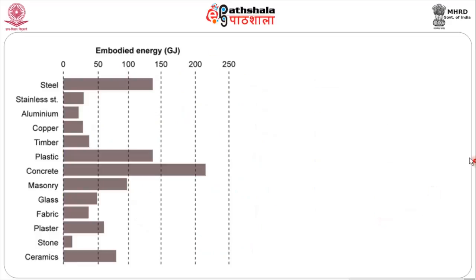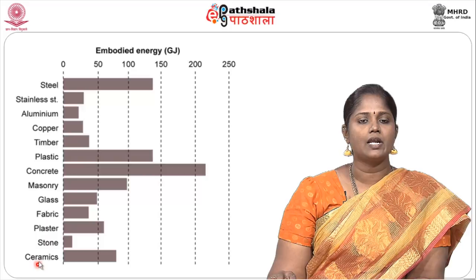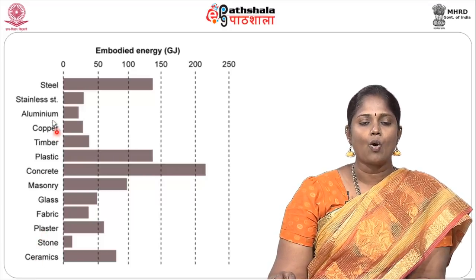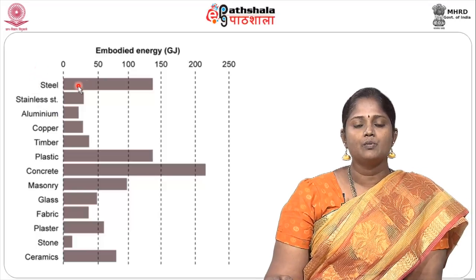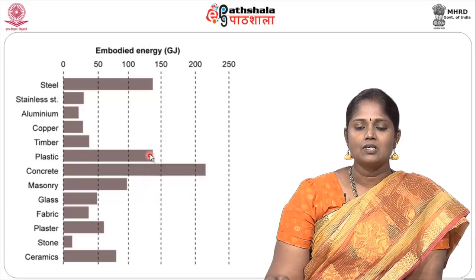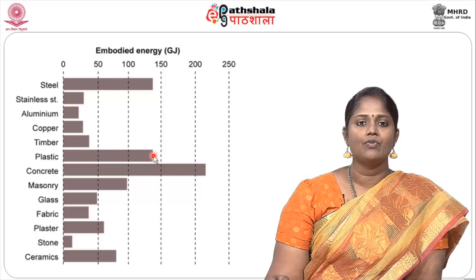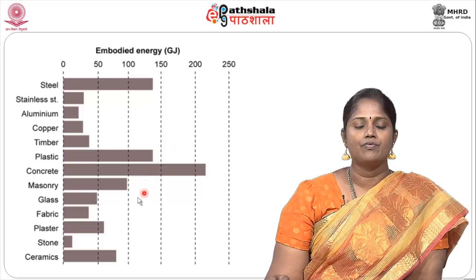Looking at a similar graph representing embodied energy of various materials in gigajoules — including plasters, stone, clay, mud, ceramics, concrete, plastics, timber, copper, aluminum, and stainless steel — steel is the highest in terms of embodied energy. Plastic, used in consumer products and in building industries for furniture and interior furnishing, comes between 100 to 150 embodied energy units. Next, concrete categorizes at about 200 to 220 embodied energy, playing a very high value in terms of energy usage, production and execution.